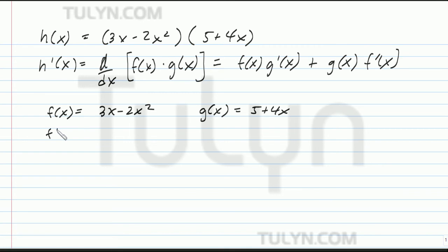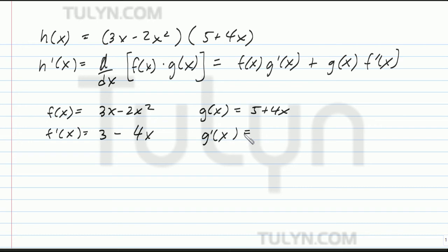So f prime of x is equal to 3 — that's the derivative of 3x — and the derivative of 2x squared will be 4x. So f prime of x is 3 minus 4x. And g prime of x is going to equal 0 plus 4, so g prime of x is 4.